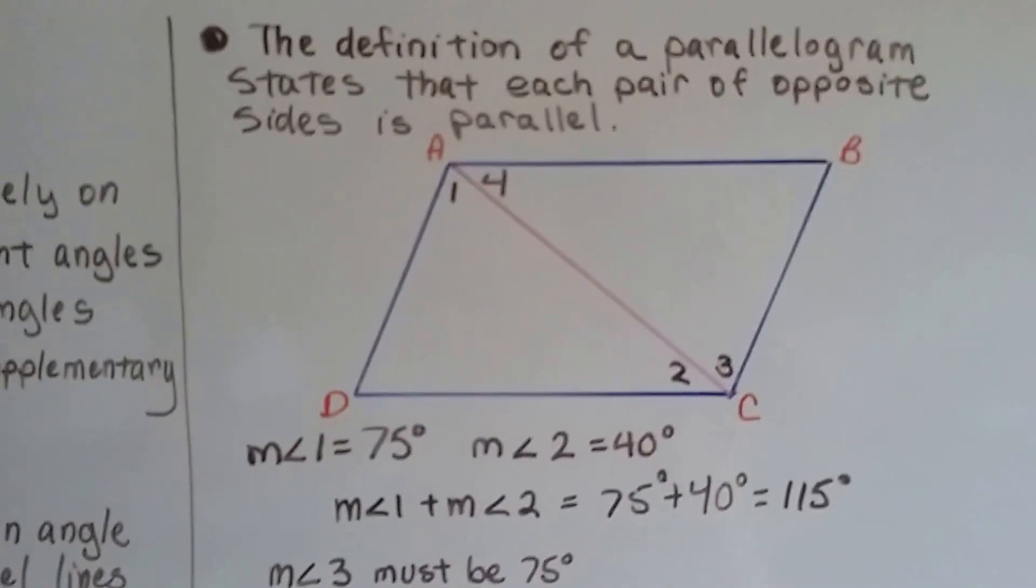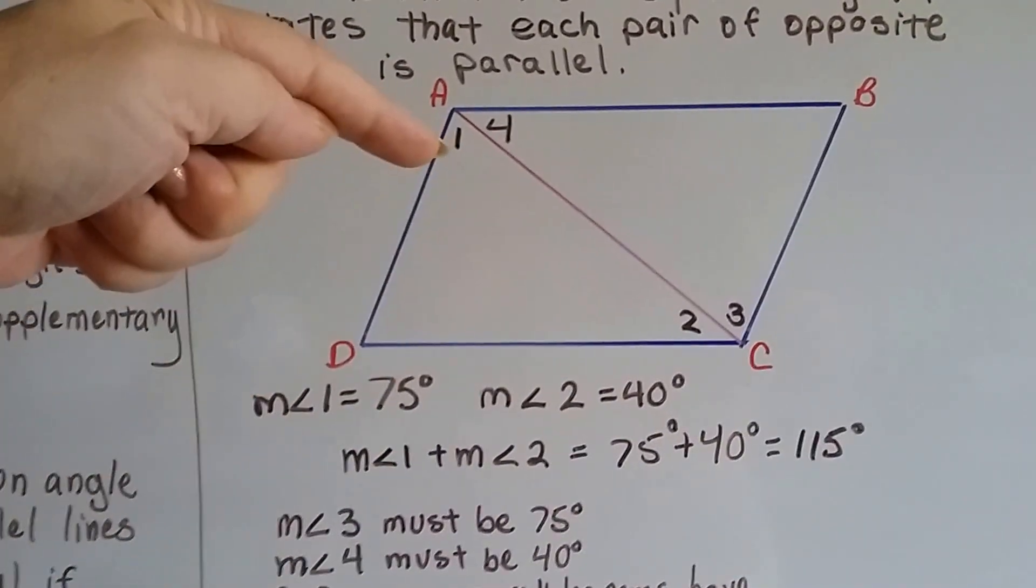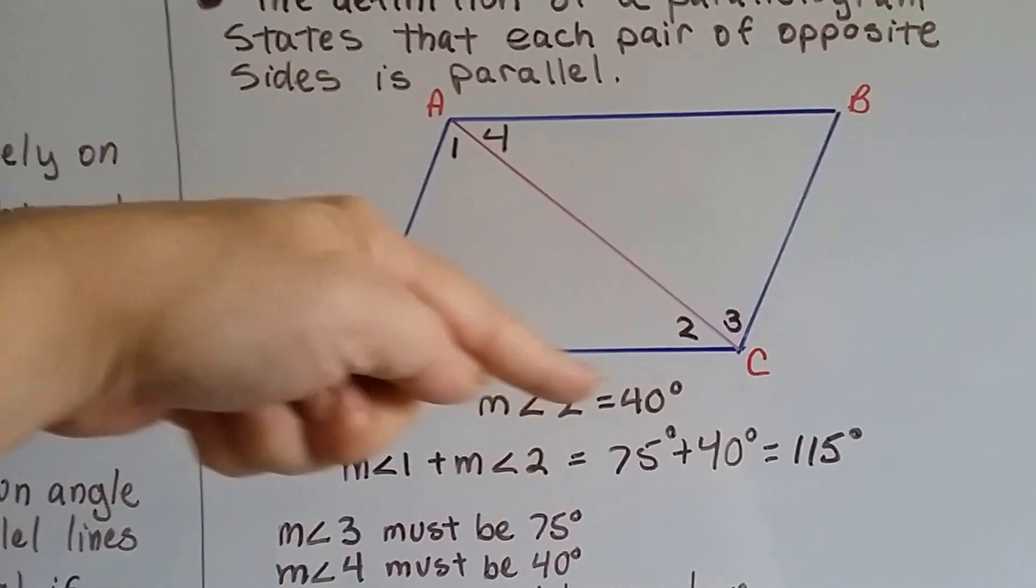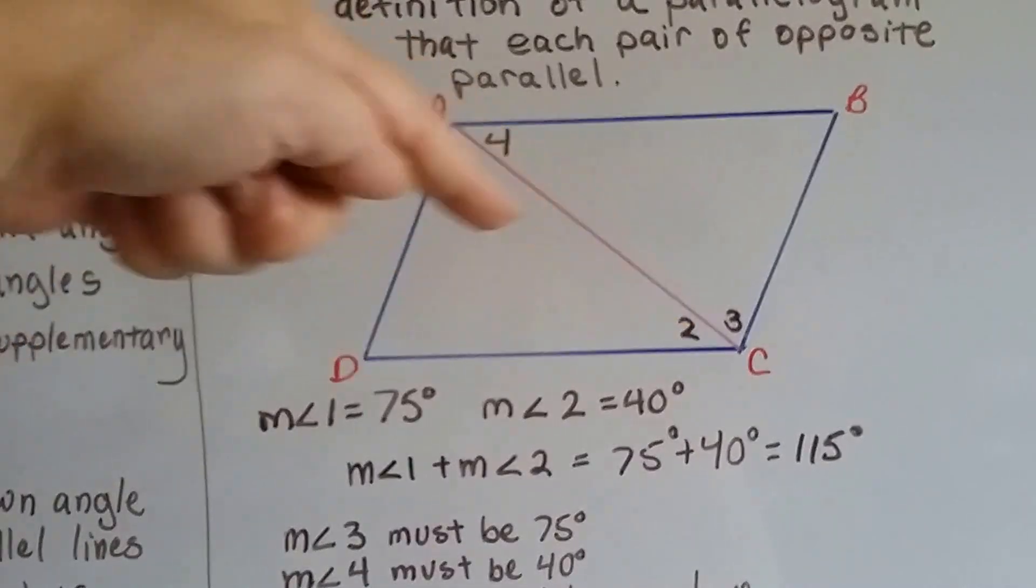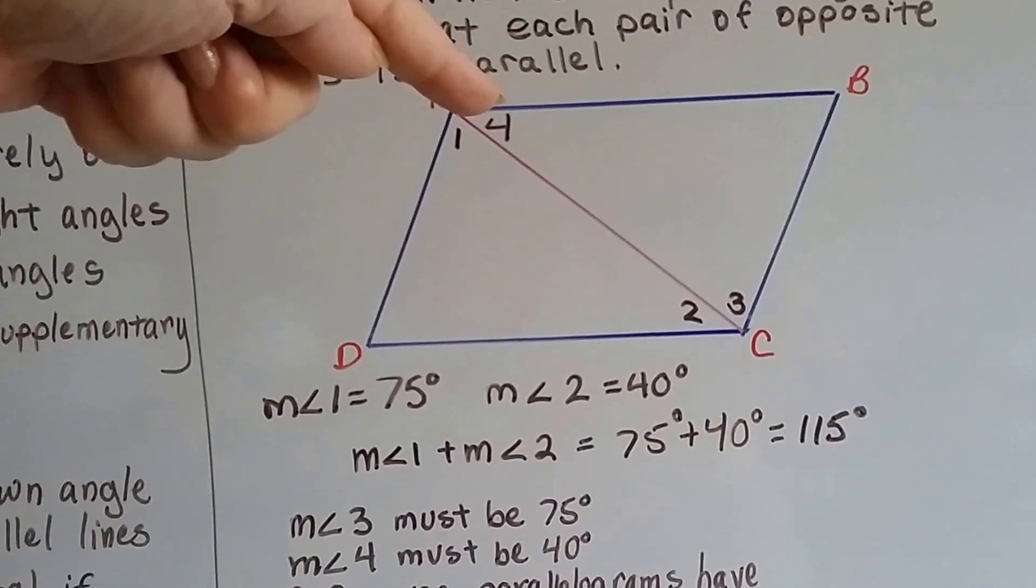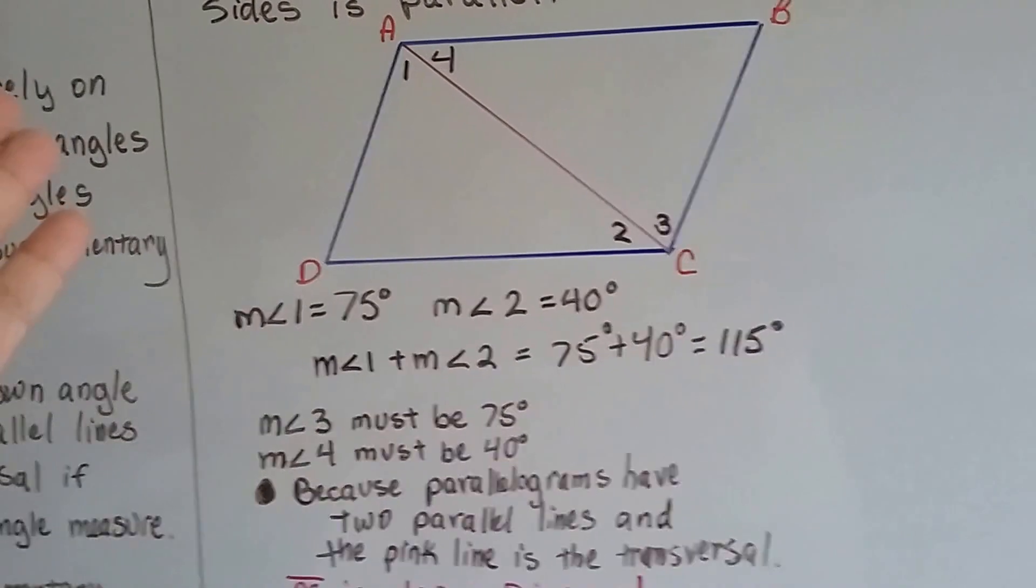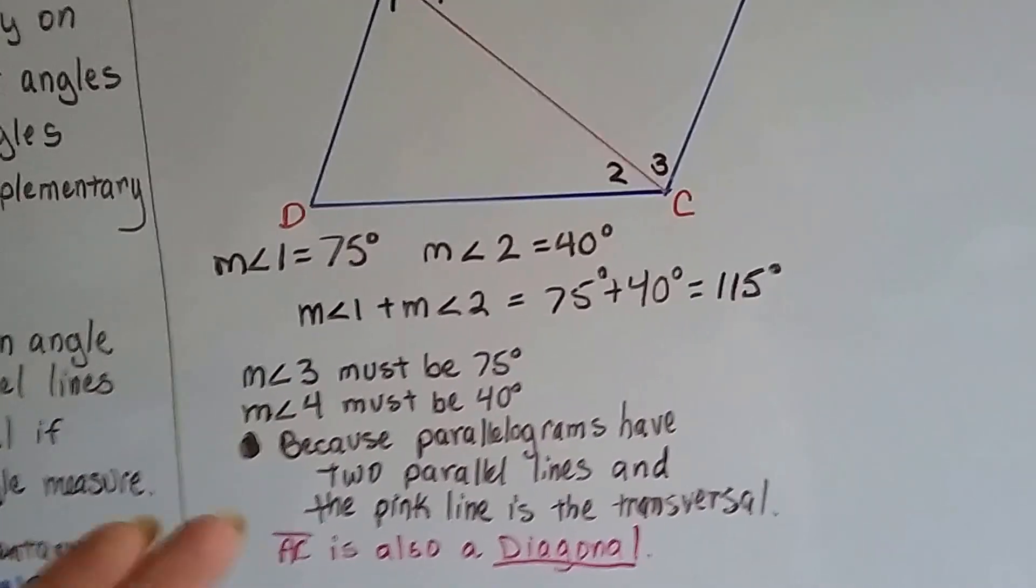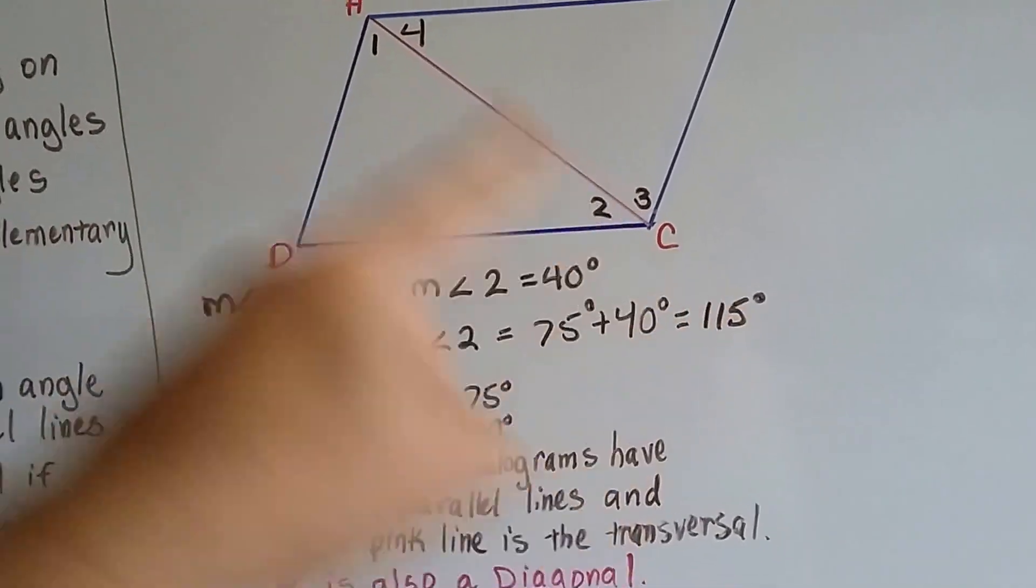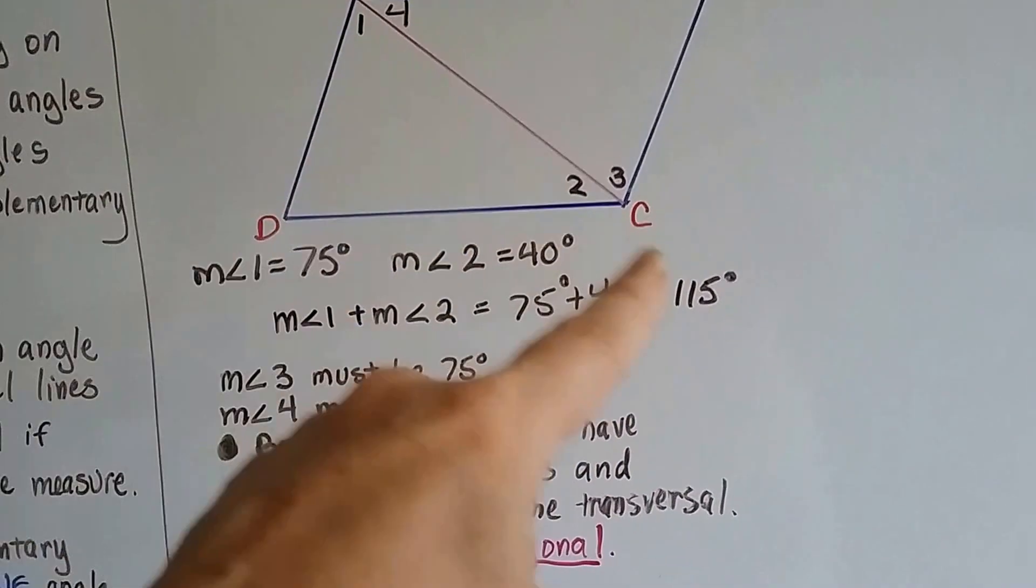Take off the edges and turn it into a parallelogram. And it's the same thing as this. If we know the measure of angle one is 75 degrees and the measure of angle two is 40 degrees down here, then we know the measures of angles three and four. We know that they're 75 and 40 degrees because parallelograms have two parallel lines and the pink line is the transversal.